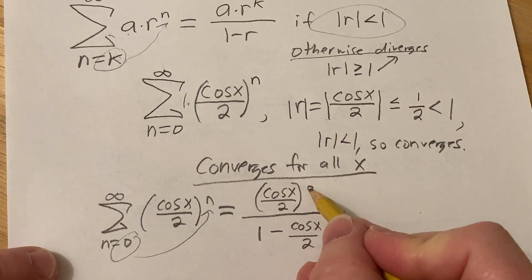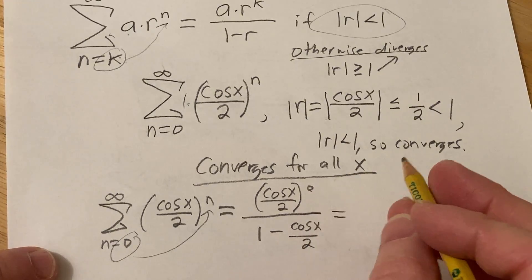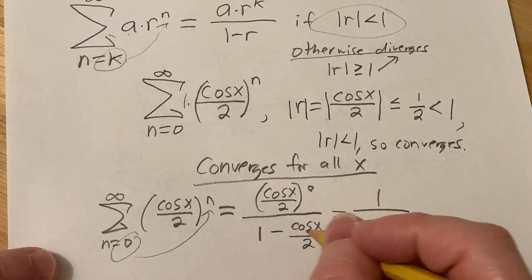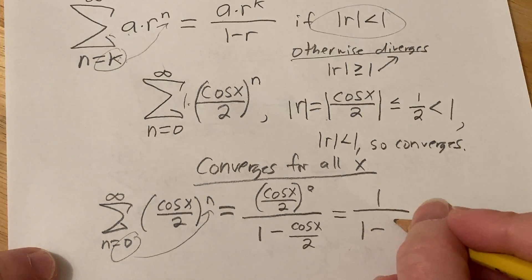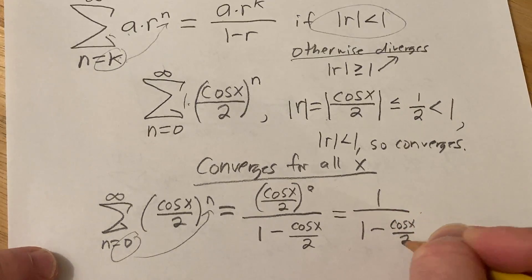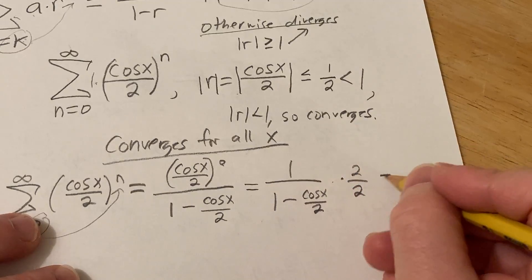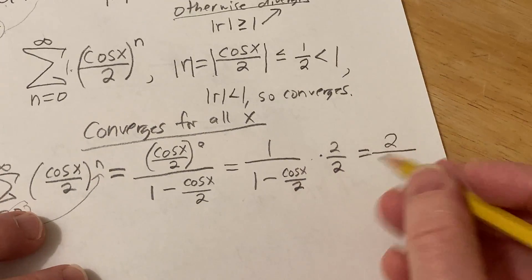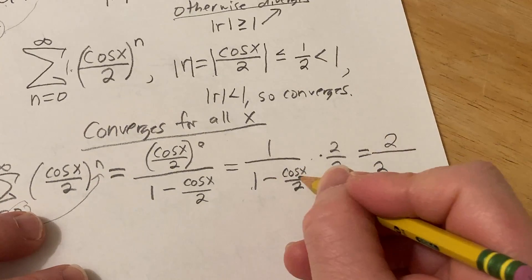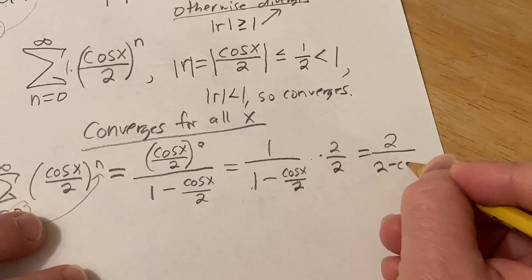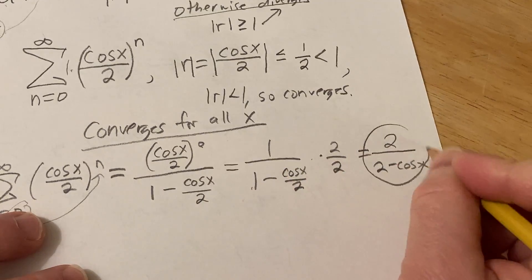This is equal to, anything to the 0 power is 1, and then here we have 1 minus cosine of x over 2. We can clean this up. We can multiply by 2 over 2. So we get 2 over, and then 2 times 1 is 2, and here 2 times this is just going to give us cosine x. So that's pretty cool.